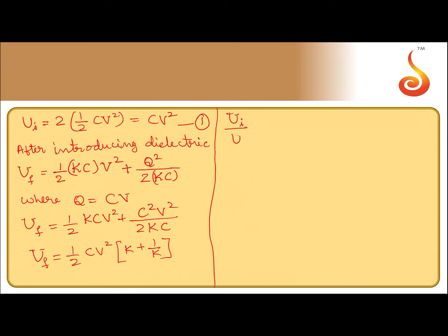U_i by U_f, if you take, 1 divided by 2, CV square CV square get cancelled. You will be left with 1 divided by half into K plus 1 by K.